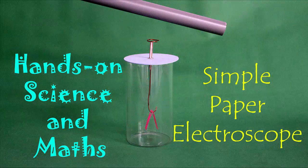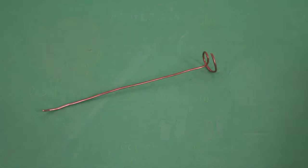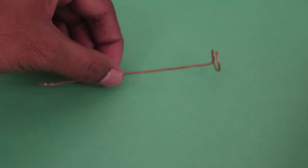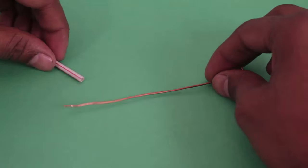Well, I read about the gold leaf electroscope in my textbook but I never saw one. But do you really need gold leaves to make an electroscope? Not really. You can make do with simple stuff.